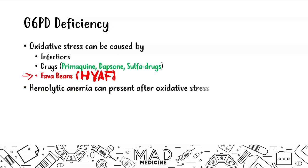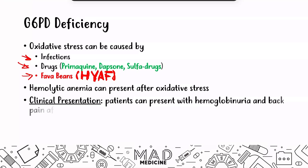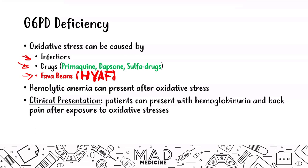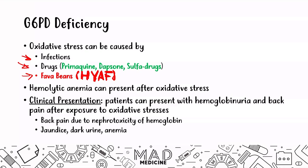Hemolytic anemia presents after oxidative stress exposure — one of those three triggers will typically be the main cause. Clinically, you're going to see a patient who complains of hemoglobinuria and back pain after being exposed to something that increases oxidative stress. Red blood cells are lysed, hemoglobin passes through the kidneys into the urine, and the nephrotoxic effects of hemoglobin cause back pain. You can also see jaundice, dark urine, and anemia.